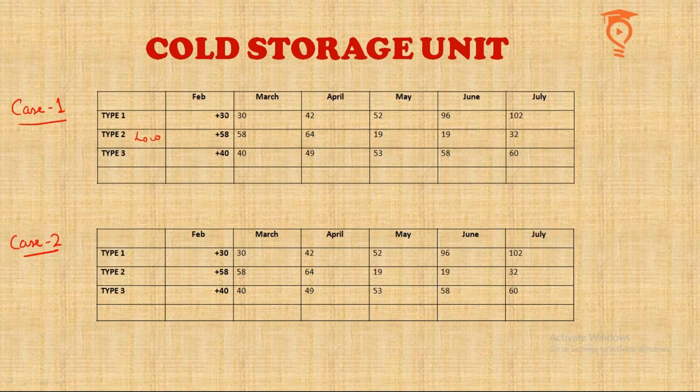I've started the table from February end. Numbers on the right-hand side of the February column mean they were added towards the end of that month. In the columns for March, April, May, June, and July, numbers on the left side represent quantities observed at the start of the month.